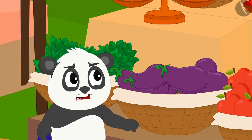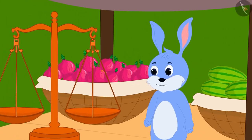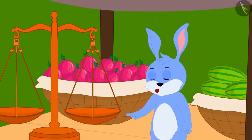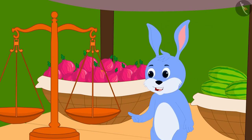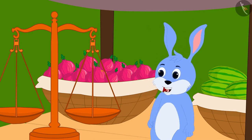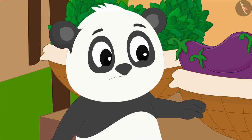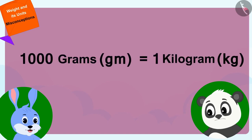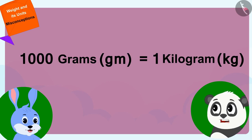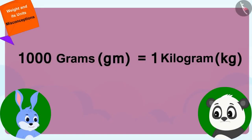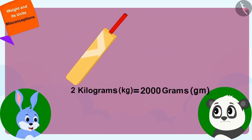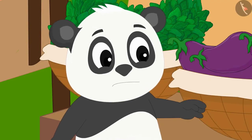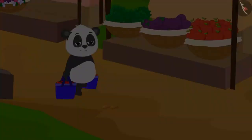Bunny laughed and said: calm down, I will explain. Look, Babban gave you 1,000 gram apples, and 1,000 grams is equal to 1 kilogram. That means both shops gave you apples of the same weight. Remember Golu, whenever you want to compare the weight of anything, first write their weights in the same units. Only then will you be able to compare them correctly.